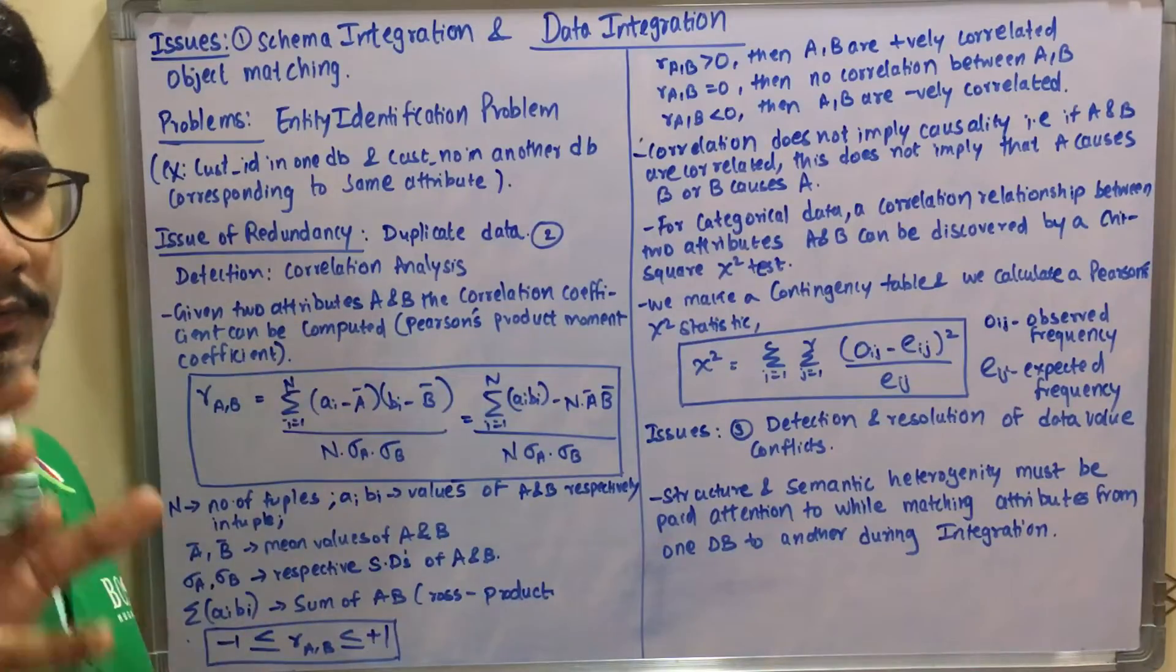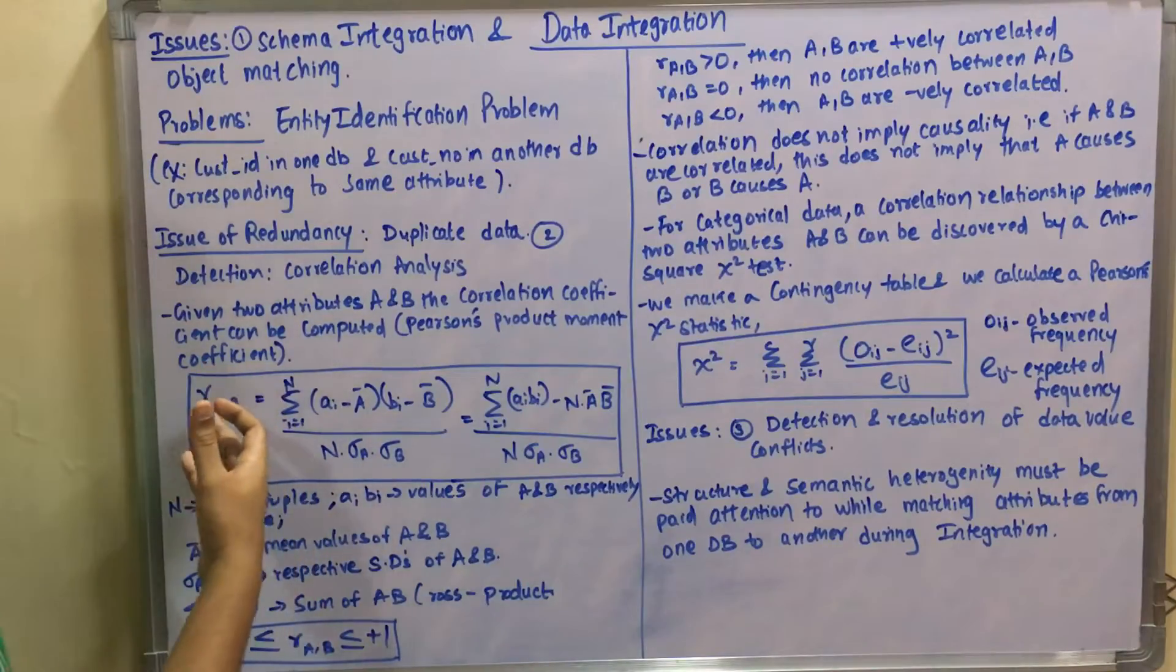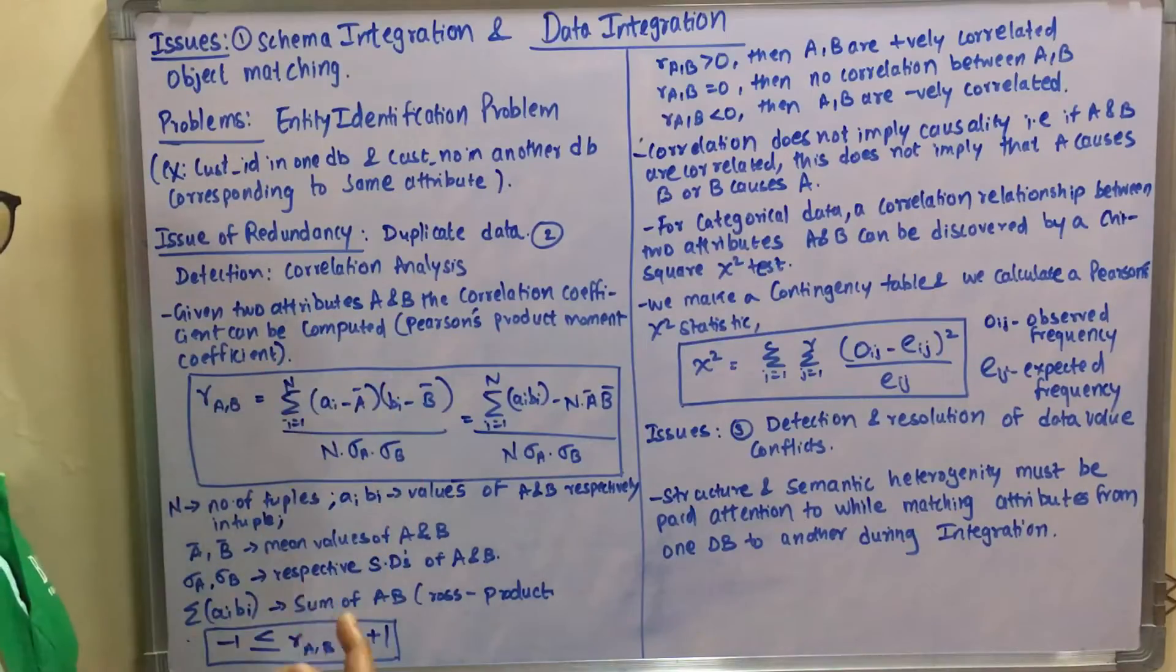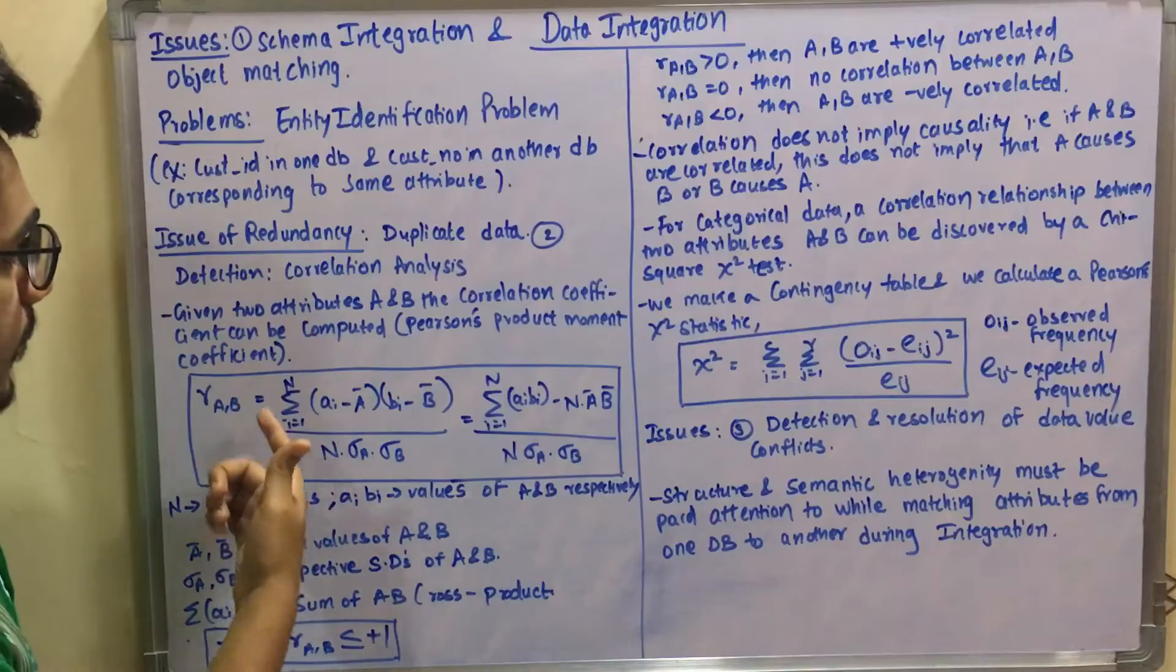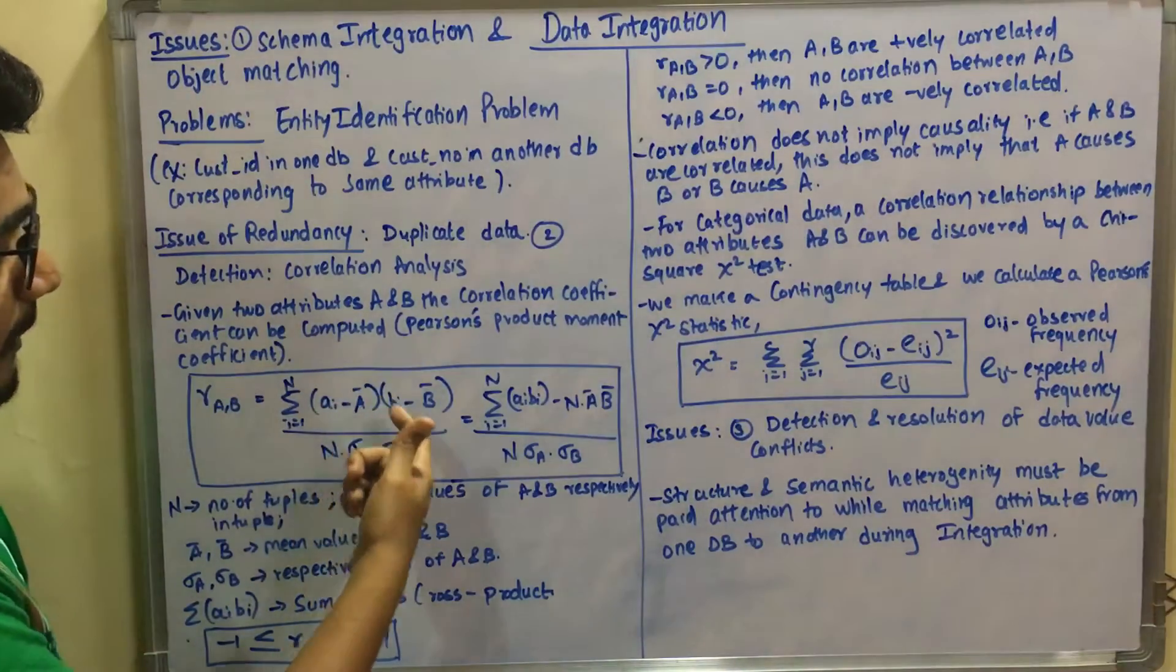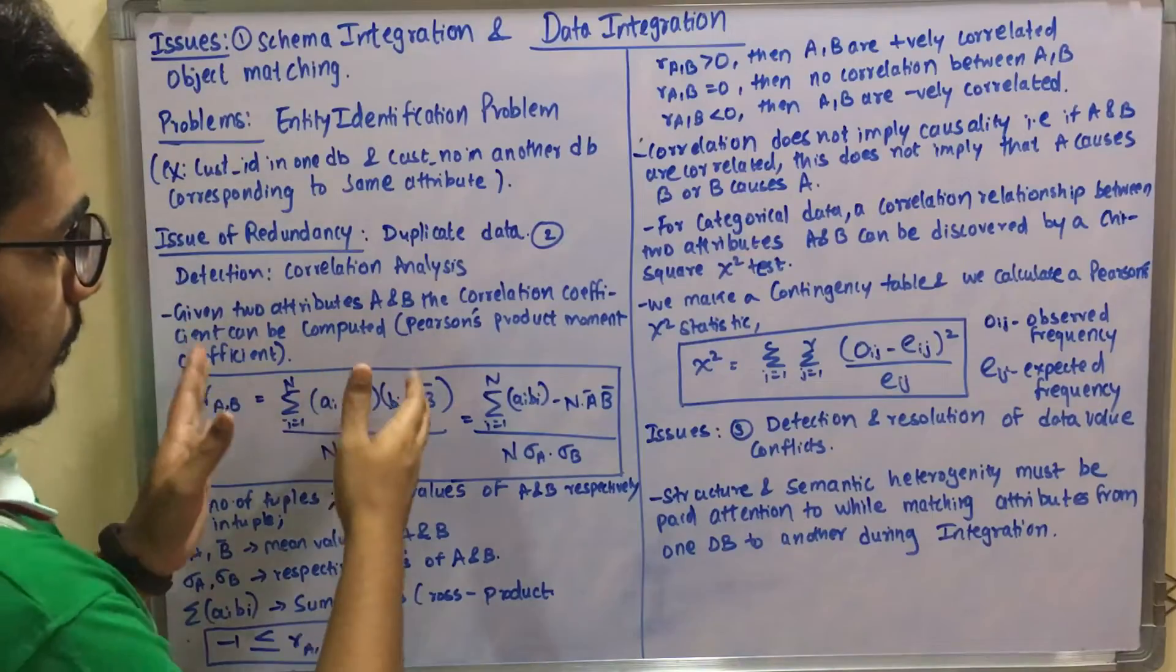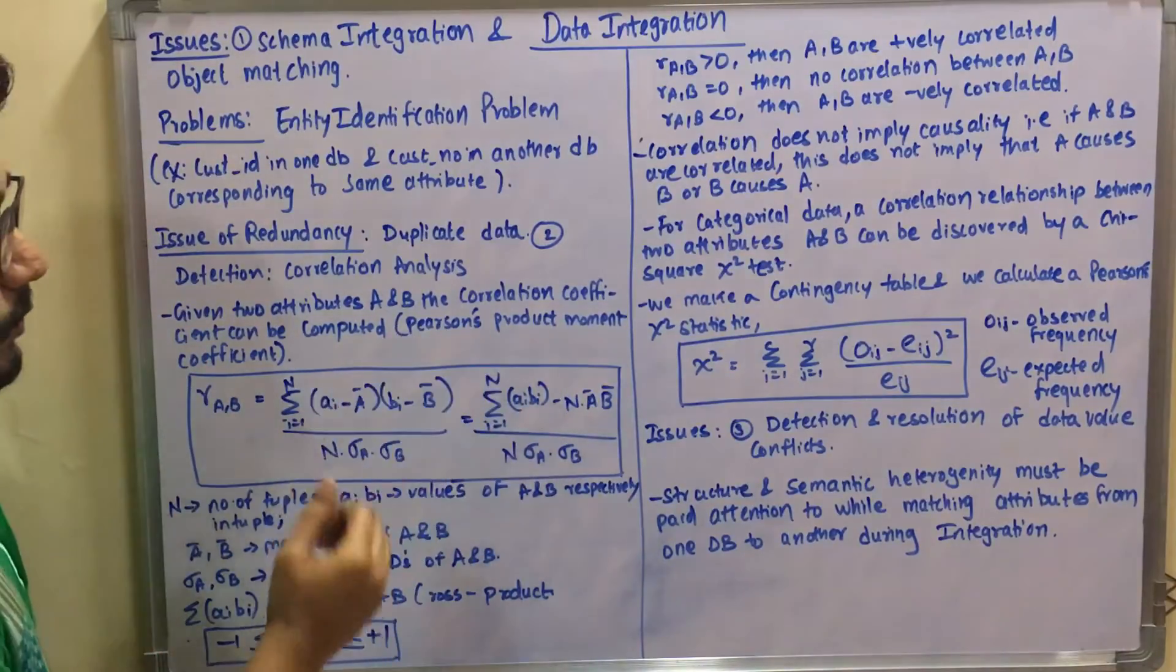The correlation coefficient can be computed using Pearson's product moment coefficient from scientist Karl Pearson. It's given as r_AB, where r is the coefficient and A, B are the variables. The formula is: summation i from 1 to n of (a_i - ā)(b_i - b̄) divided by n·σ_a·σ_b.